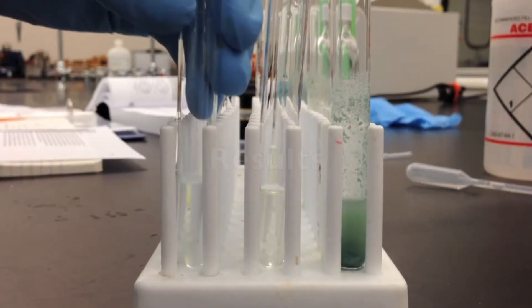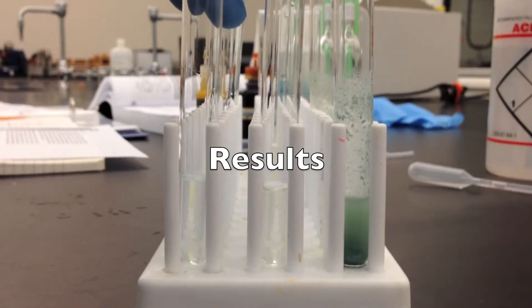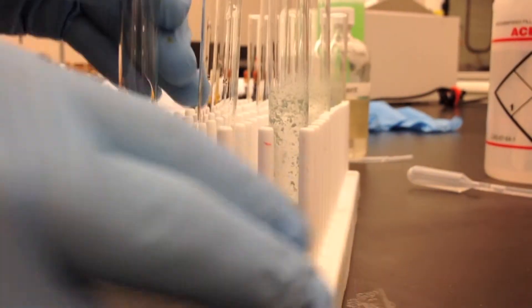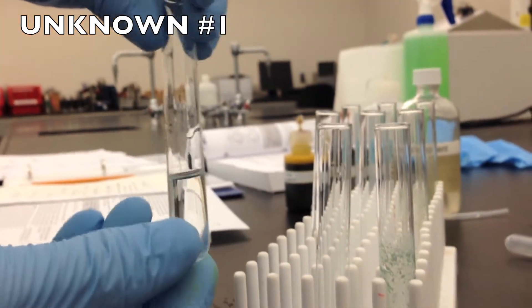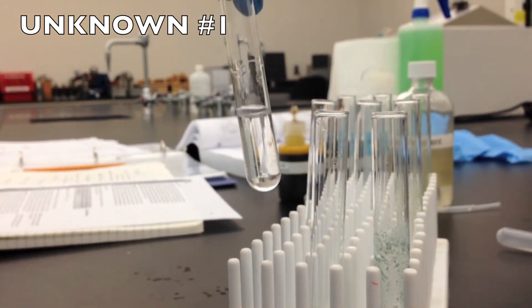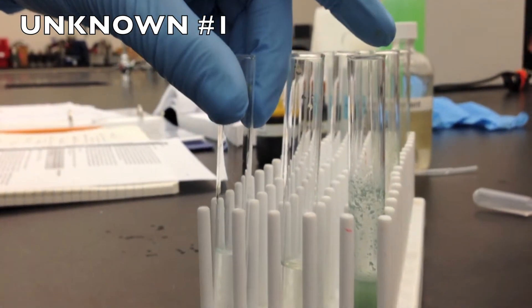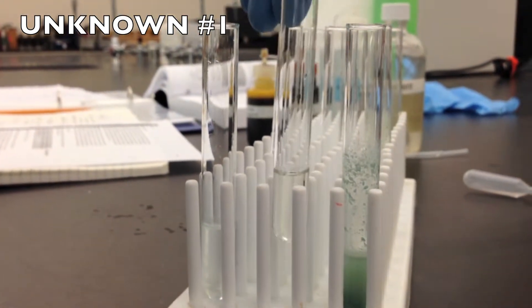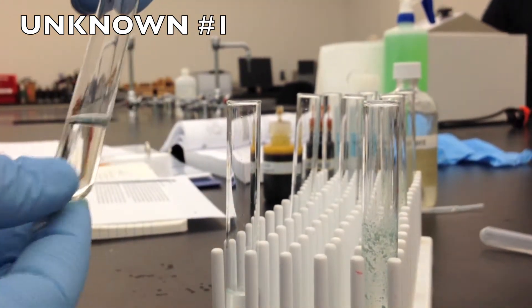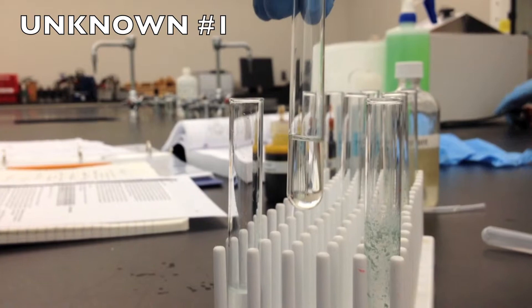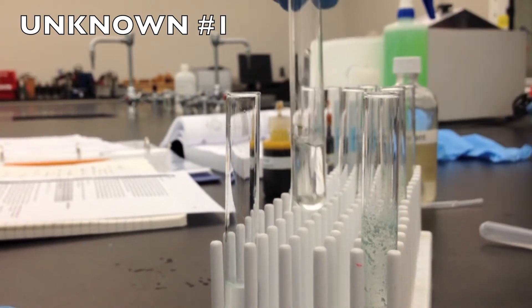Okay, now we'll go over the reactions of all three tests for all three unknowns. The first unknown for the iodoform test, we got a negative result. So we can assume that that is not a secondary alcohol. We also got a negative result for the Lucas test. So we can assume that it is not a secondary or tertiary alcohol.